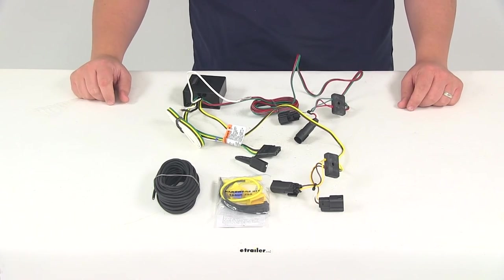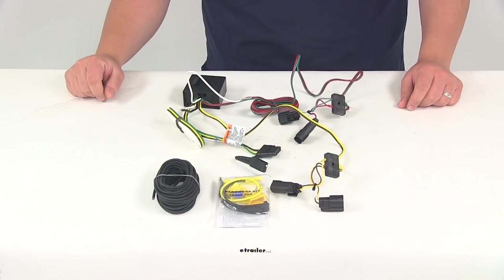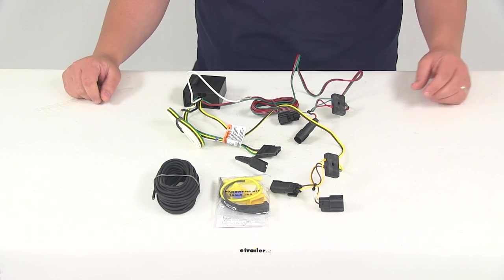That's going to do it for our review of part number 118566. This is the T1 vehicle wiring harness.